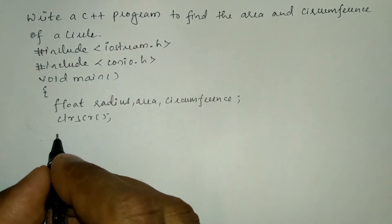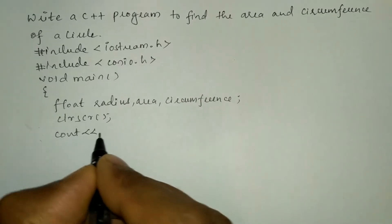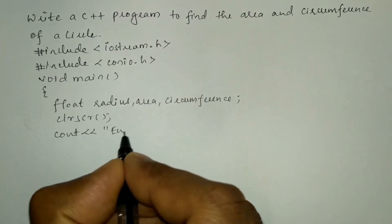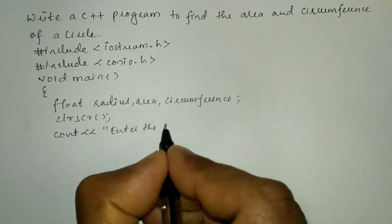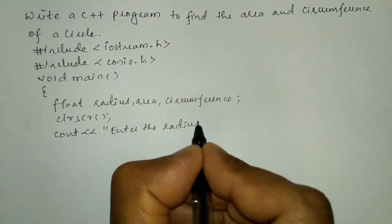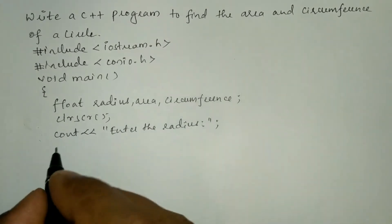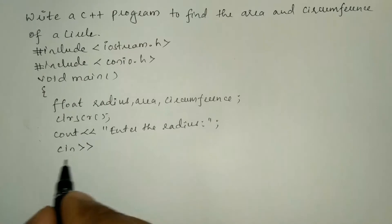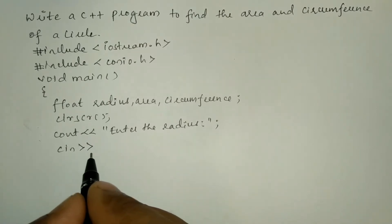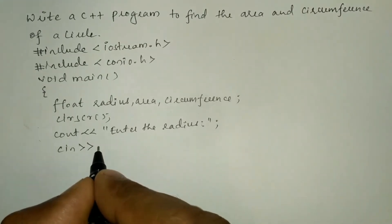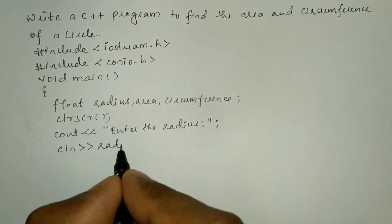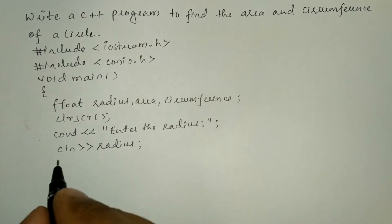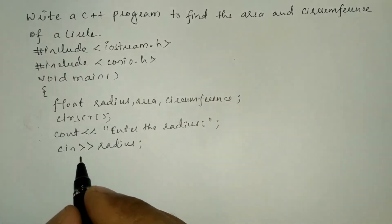Now I am going to write the clrscr() function which is used to clear the screen. Next we will ask the user to enter the radius using cout with the stream insertion operator: "Enter the radius". We are going to receive the input from the user through keyboard using cin with the stream extraction operator and store it in the variable radius.